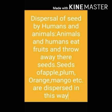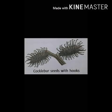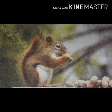Now we see how animals and humans help in dispersal of seeds. They eat fruits and throw away their seeds. Seeds of apples, plums, mangoes, oranges, cherries, etc. are dispersed in this way. Some seeds such as cocklebur, burdock, and tiger nail seeds have hooks. They stick to the fur of animals or to the clothes of humans and get dispersed.